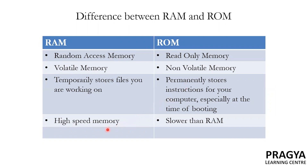Next, RAM is a high-speed memory while ROM is slower than RAM. These are the differences between RAM and ROM.